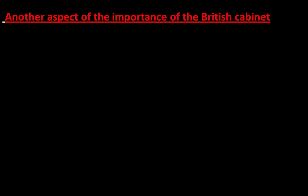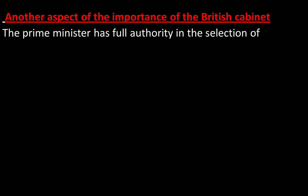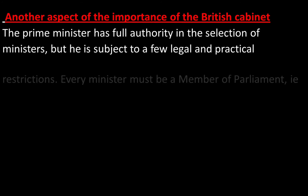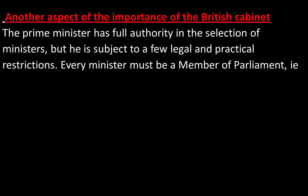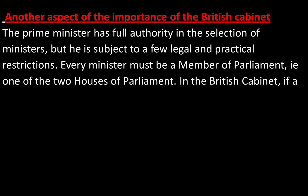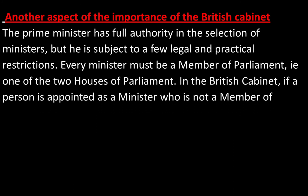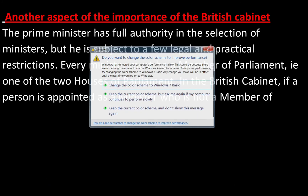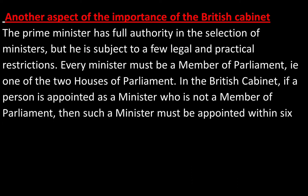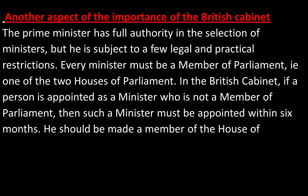Another aspect of the importance of the British Cabinet: the Prime Minister has full authority in the selection of Ministers, but he is subject to a few legal and practical restrictions. Every Minister must be a Member of Parliament — one of the two Houses of Parliament. If a person is appointed as a Minister who is not a Member of Parliament, then such a Minister must be made a Member of the House of Commons by holding elections within six months.